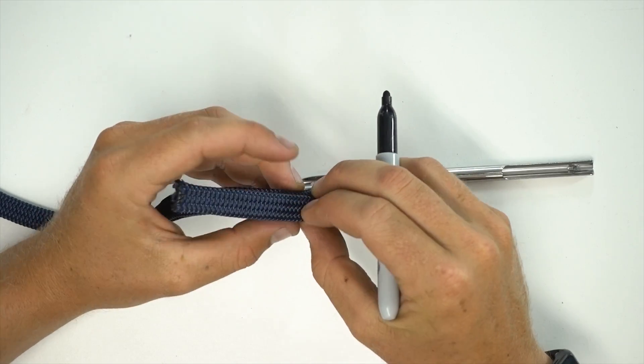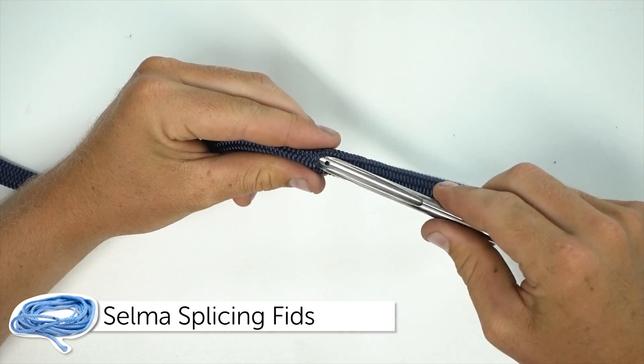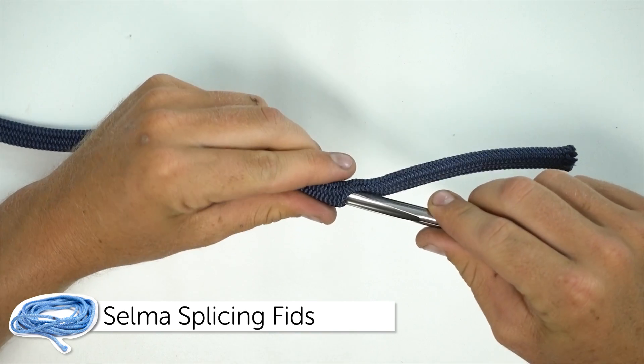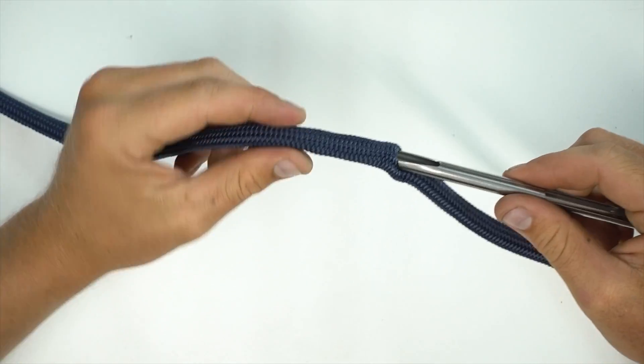We then make a mark where we want the loop to start. Then grab our fid and insert it at this mark. We then feed our fid through the rope until it hits the core.